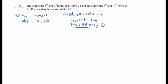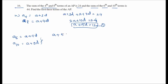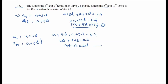The sum of the 6th and 10th terms is 44. The 6th term is a plus 5d and the 10th term is a plus 9d. Adding: 2a plus 14d equals 44, which simplifies to a plus 7d equals 22. This is equation 2.